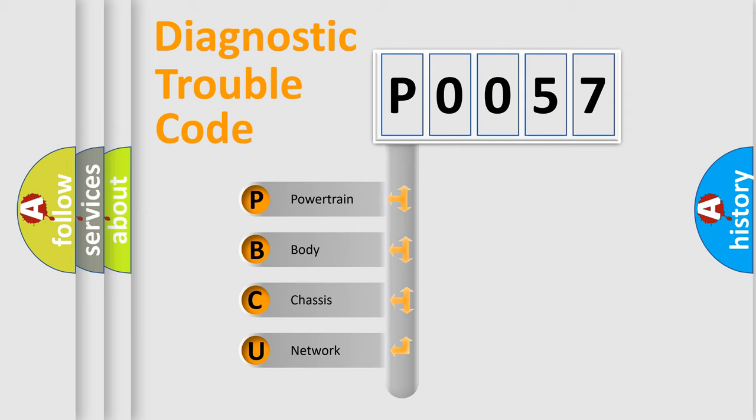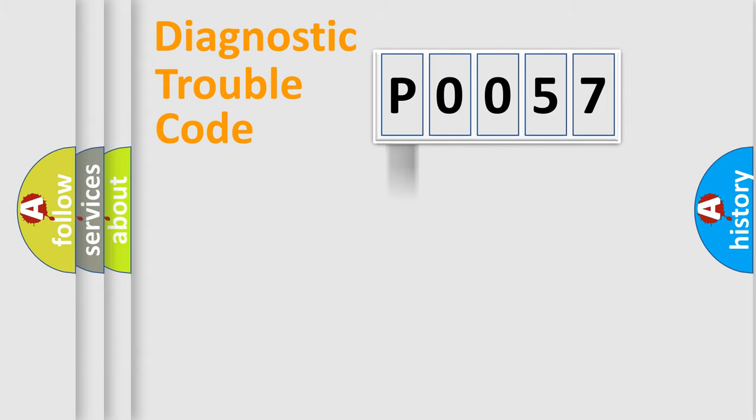We divide the electric system of automobile into four basic units: Powertrain, Body, Chassis, and Network. This distribution is defined in the first character code.